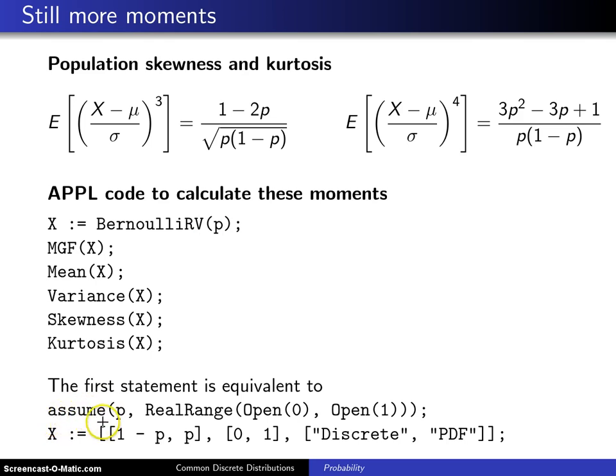It is putting an assumption on p, saying that it falls in the range from 0 to 1. So that's the first thing that is done when you execute X equals BernoulliRV, and then the second thing that is done is X gets set equal to a discrete random variable and its pdf is given by 1-p, which is the probability it is a failure, and p, which is the probability it is a success.